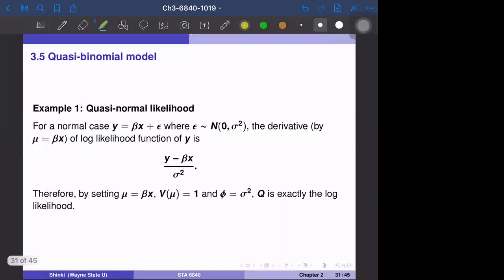Example one, the quasi-normal likelihood function. Suppose that y equals beta x plus epsilon. Beta and x are matrices, but just think about maybe a simple case that beta and x are scalars. Epsilon follows normal zero sigma square. If epsilon follows this distribution, then we can calculate the likelihood function and the derivative.